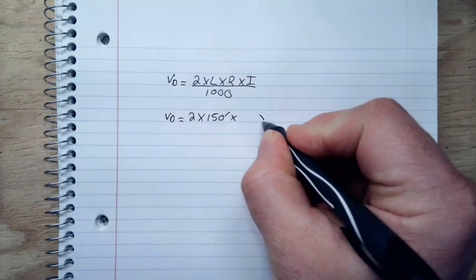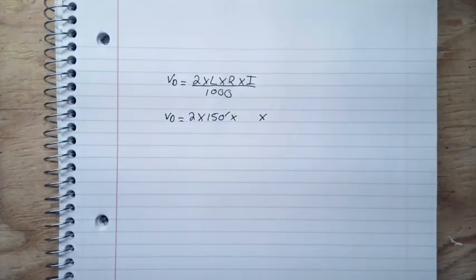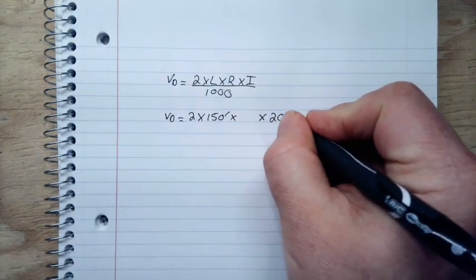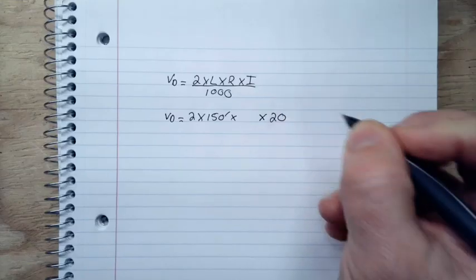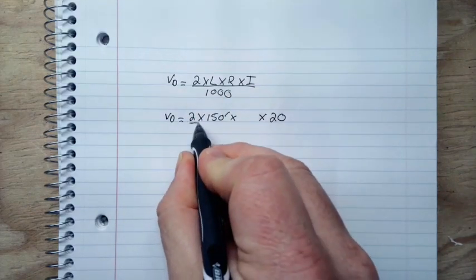Then I will go to our current, which I have here as 20 amps. So I'll have 20. All of this will be divided by 1,000.